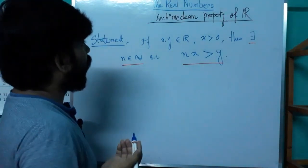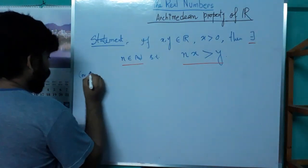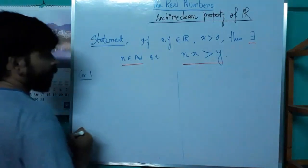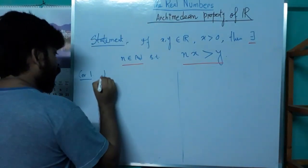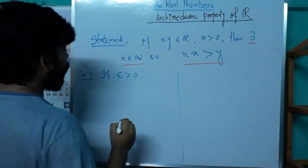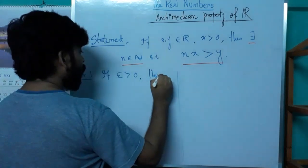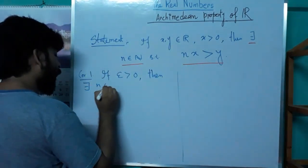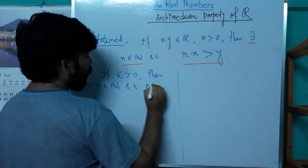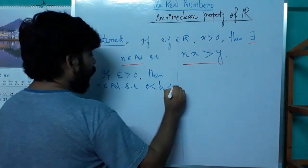Now we discuss some applications of the Archimedean property. The first application: if ε is a positive real number, then there exists a natural number n such that 0 < 1/n < ε.